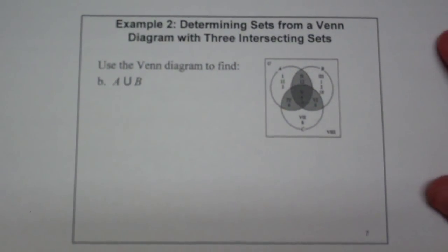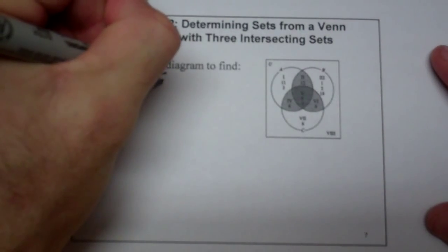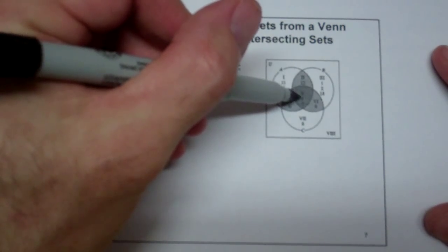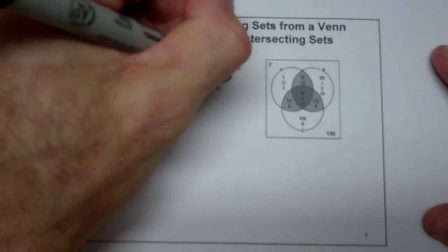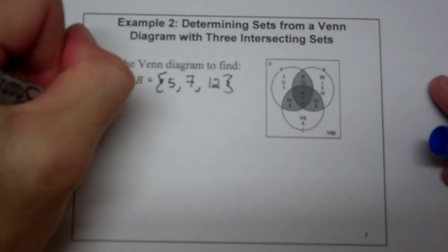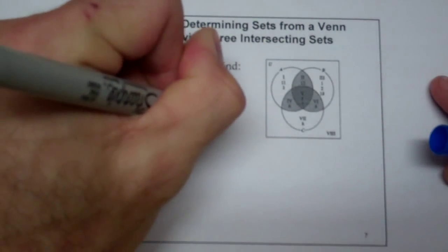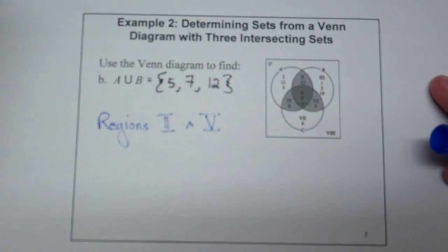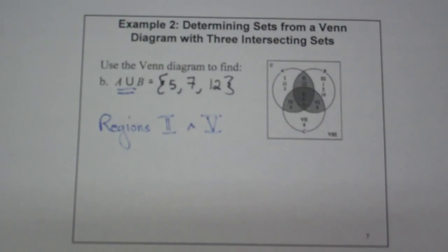For example B, we want A intersection B. This is going to be a smaller set because it's only the elements in A and B, so that's going to be regions 2 and 5. Because it's only those three elements, we're going to have 5, 7, and 12. So we're only looking at regions 2 and 5 for this operation.